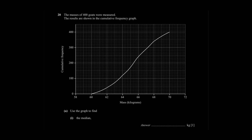Welcome back. This is a cumulative frequency question which we will solve in this video. Let's read the question. The masses of 400 gourds were measured. The results are shown in the cumulative frequency graph. Use your graph to find the median.